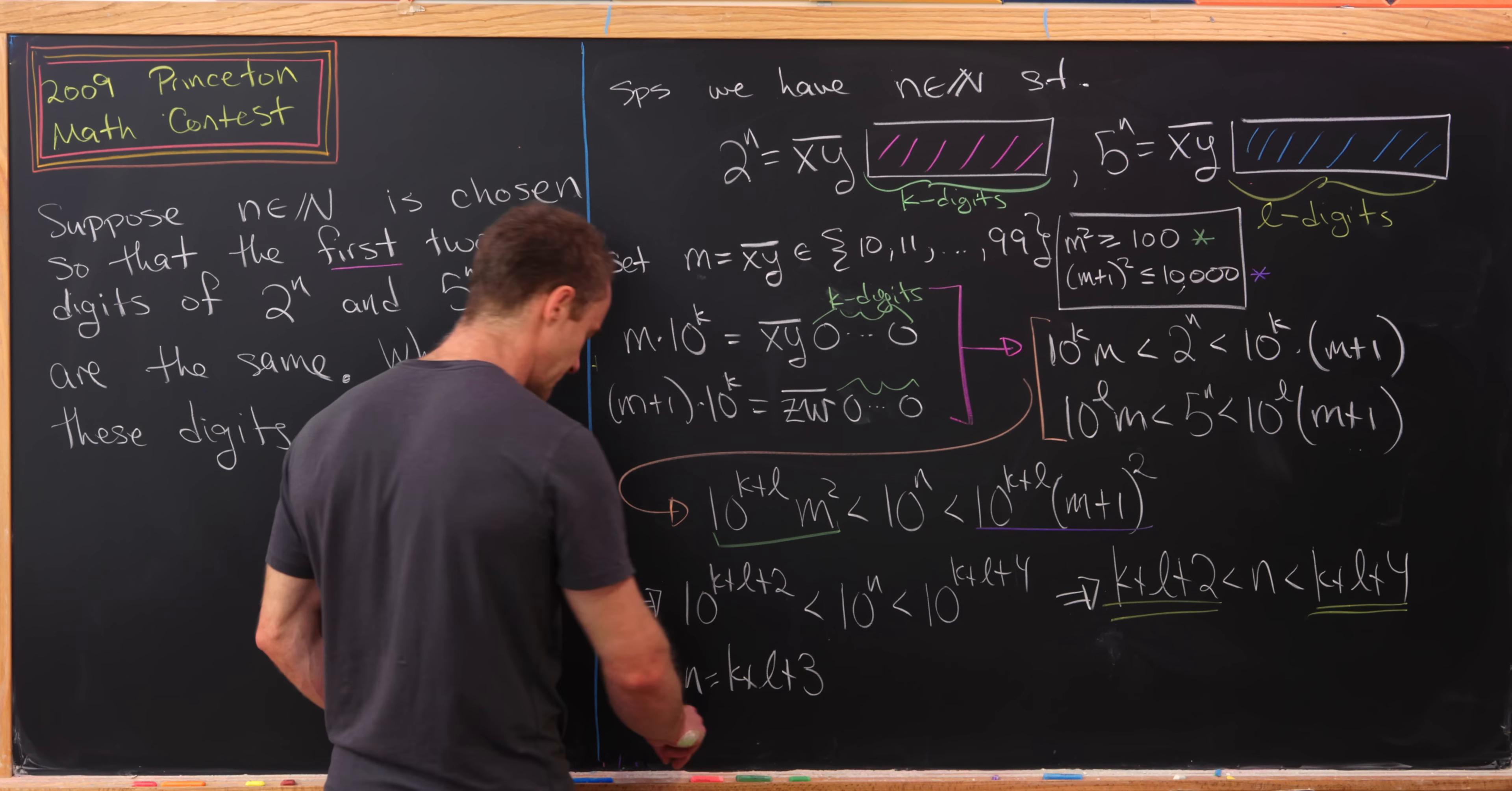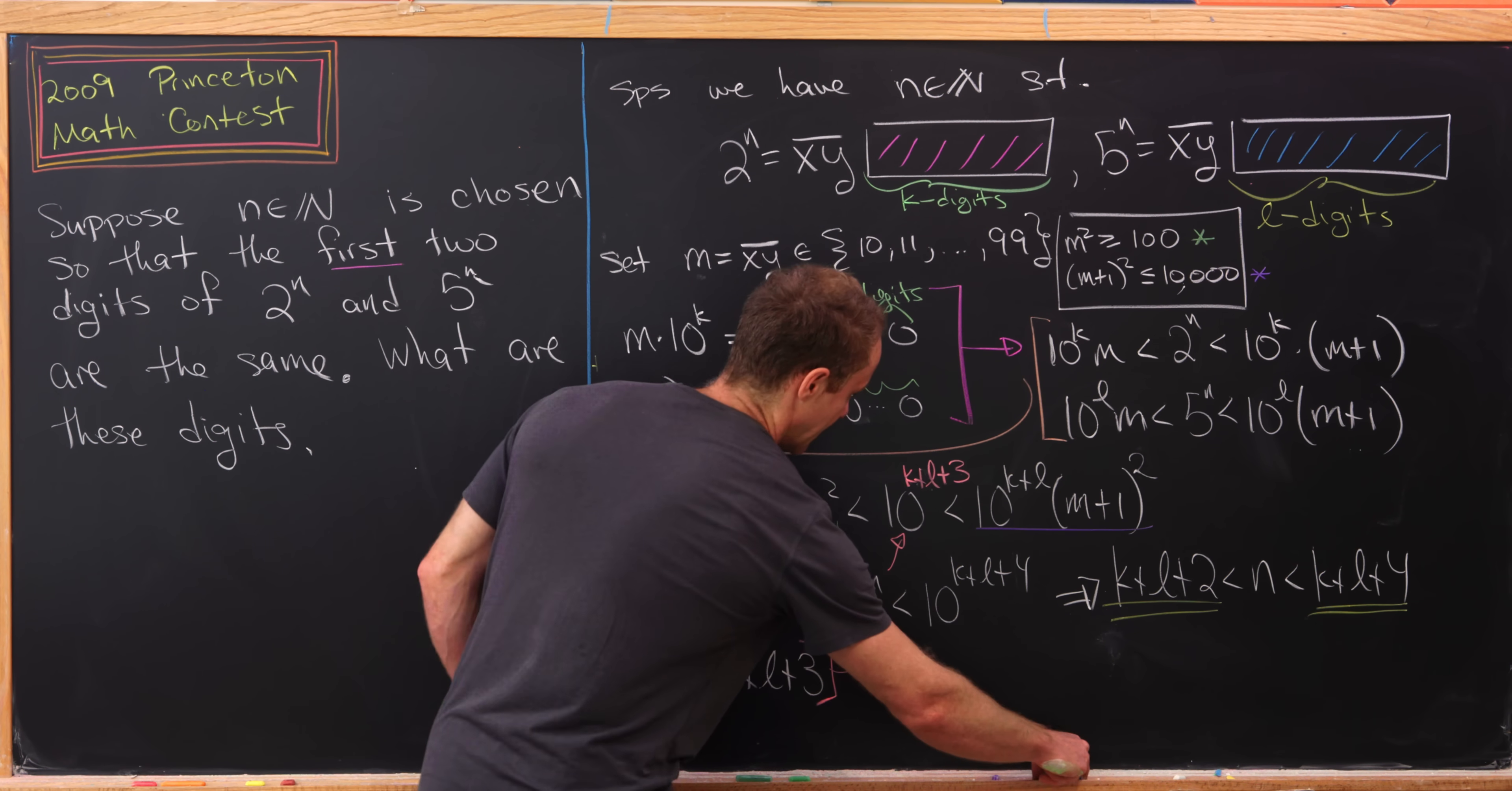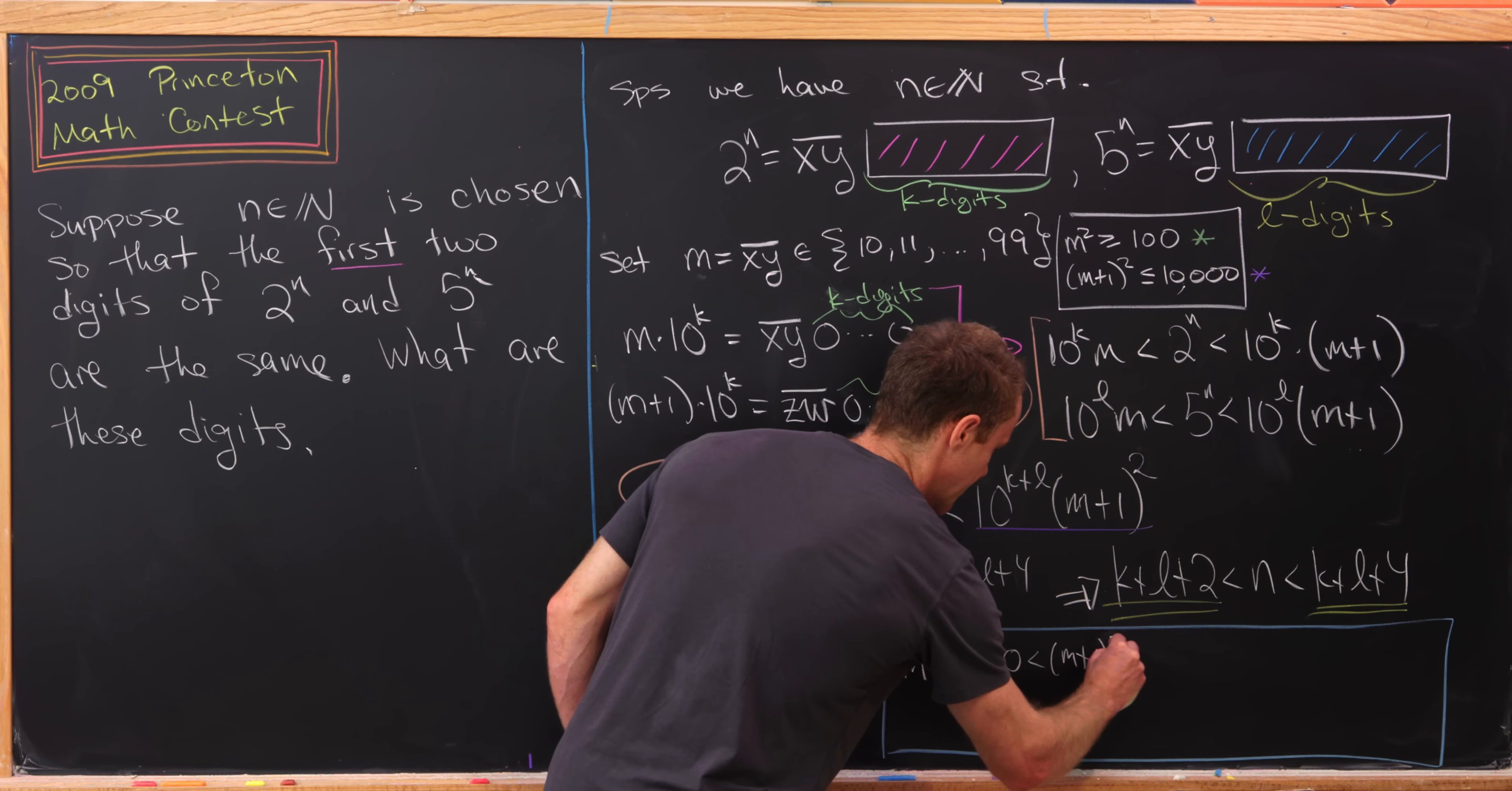Let's use that. Take this case that n equals k+l+3 and plug it back in. We'll replace this n with k+l+3. That motivates me to divide that entire inequality by 10^(k+l), because we see a factor of 10^(k+l) everywhere. That'll give us m^2 is less than 1,000, which in turn is less than (m+1)^2.